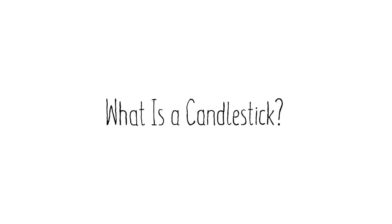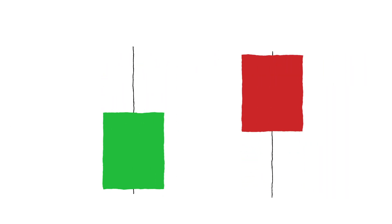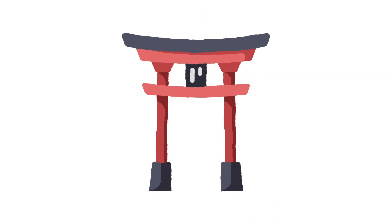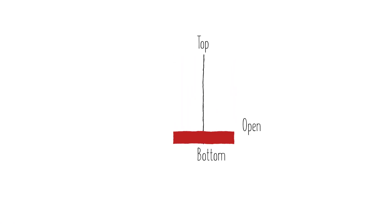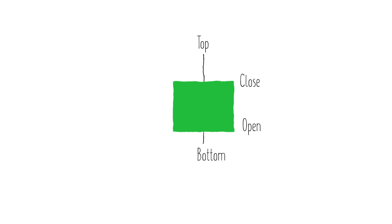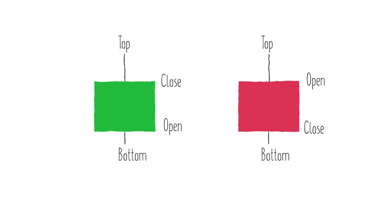A candlestick, put simply, is a charting tool that helps show an asset's movement. It was invented by a Japanese rice merchant to help track market prices and momentum. The reason why it's so highly regarded is because it shows the stock's open, top, bottom, and close, and if it's a green candle or red candle, which helps determine the direction of the stock.